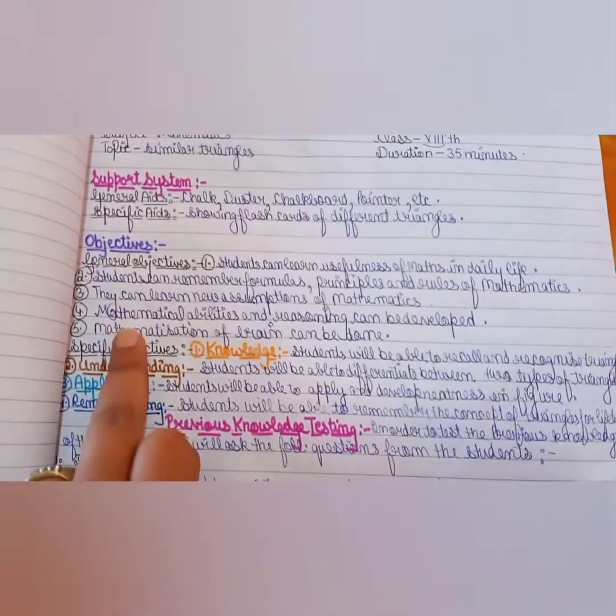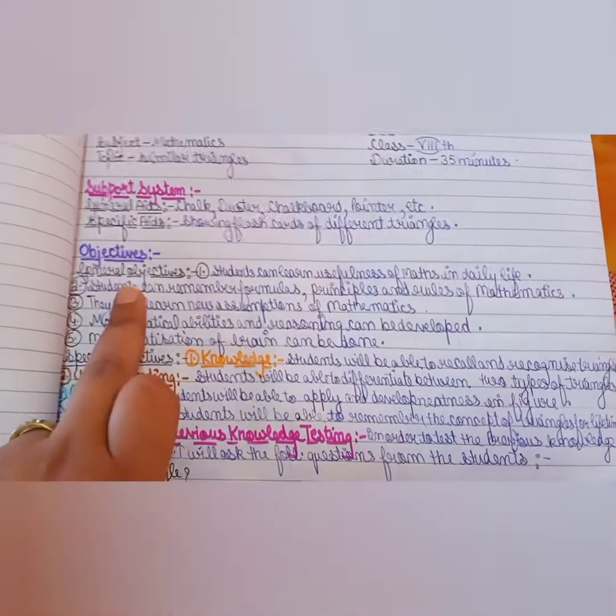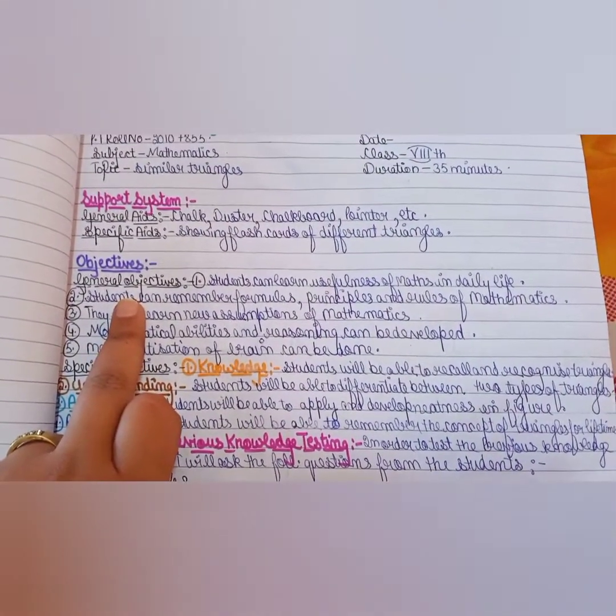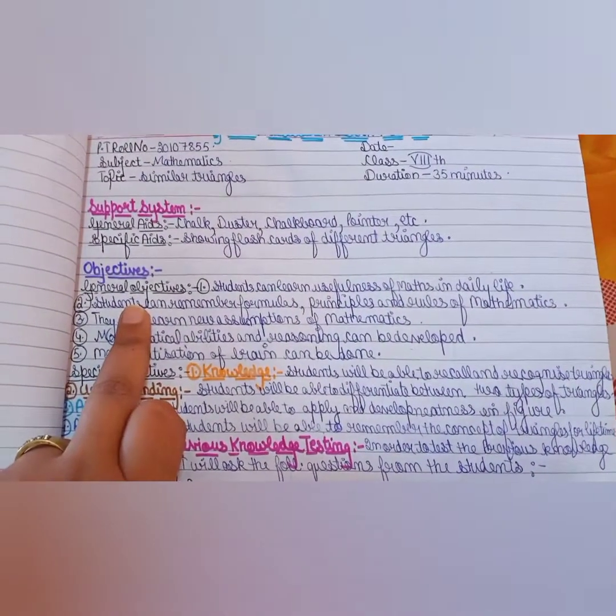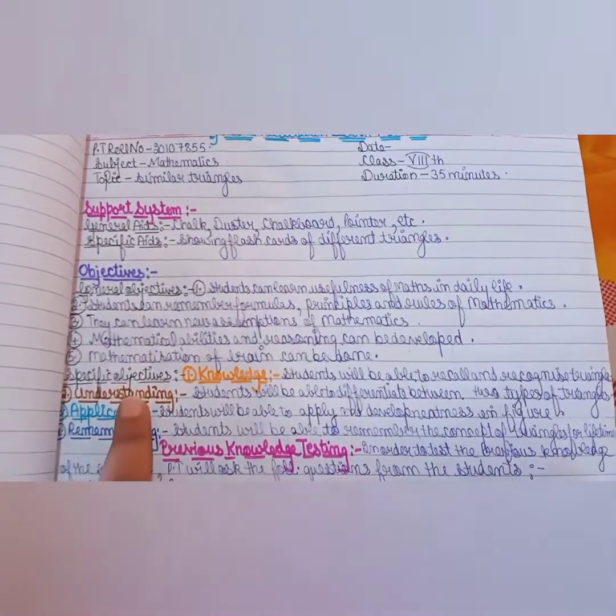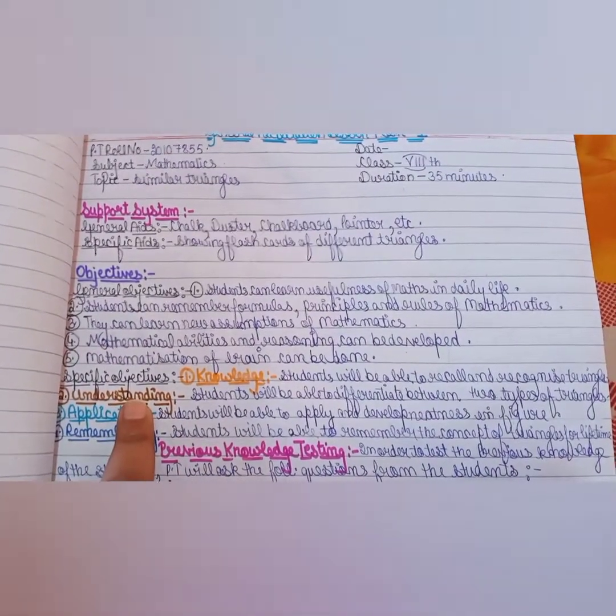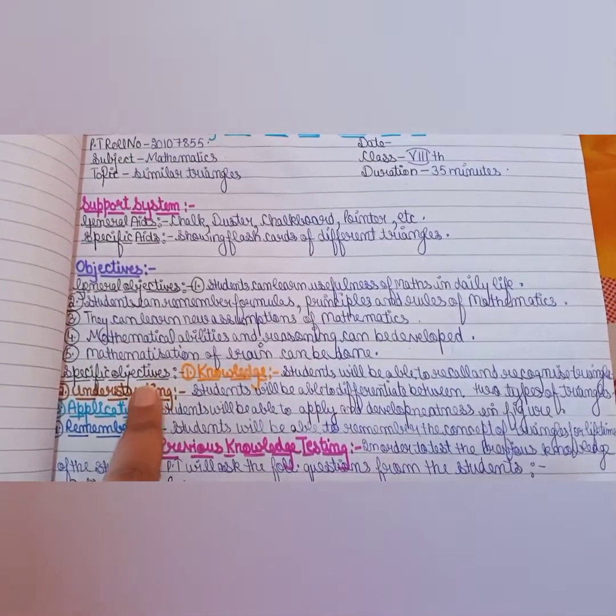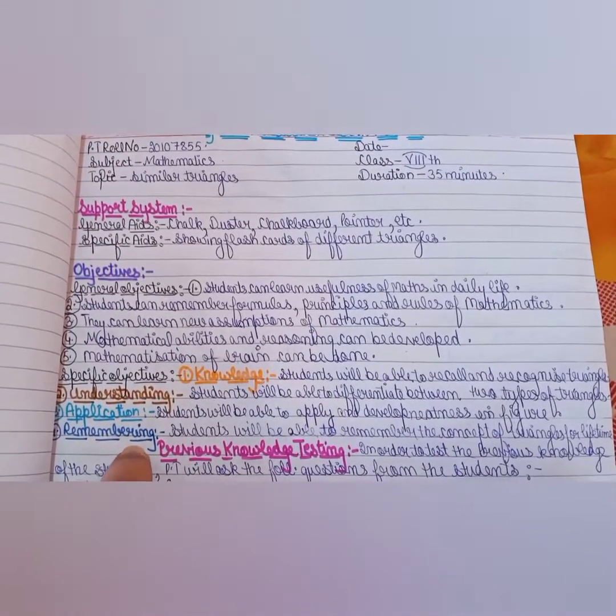Objectives are two types: General Objectives and Specific Objectives. General Objectives are the ones that the teachers take themselves. Specific Objectives are Blooms Taxonomy: Knowledge, Understanding, Application, Remembering, Analysis, Synthesis.